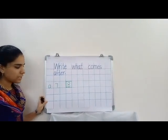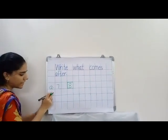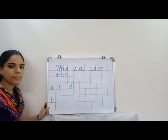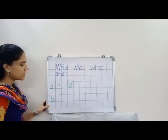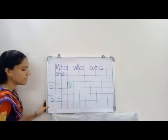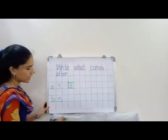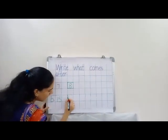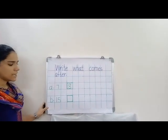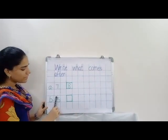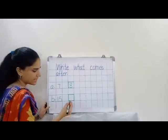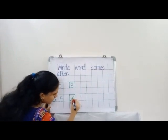Okay children, now next one. Leave one line and write small b dot. And let us write 15. Now leave one box and draw one box. Now tell me which number comes after 15. Yes, it's 16.